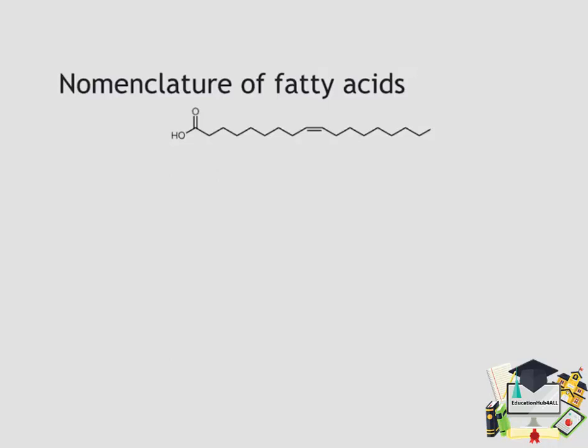Here we see an example molecule known as oleic acid. This is an 18-carbon, one-double-bond monounsaturated fatty acid. Oleic acid happens to be one of the most dominant fatty acids present, for example, in olive oil. For a naming convention, we can begin counting the total number of carbons in any fatty acid molecule beginning at the carboxyl terminal, also known as the alpha carbon. In this example we can see this fatty acid molecule has 18 carbons, thus it is a C18 fatty acid.